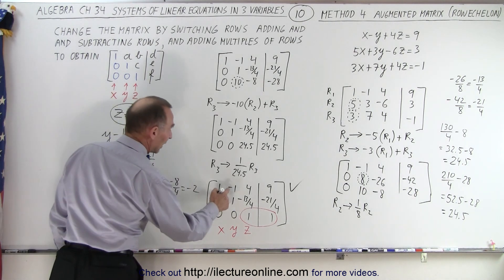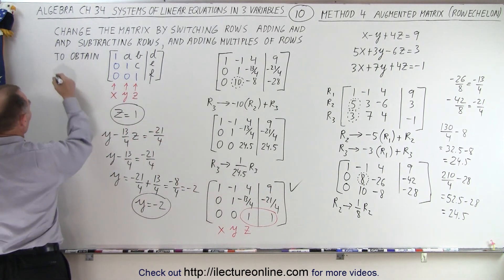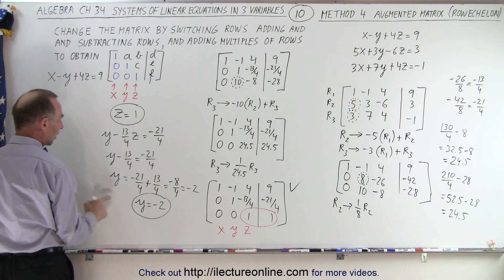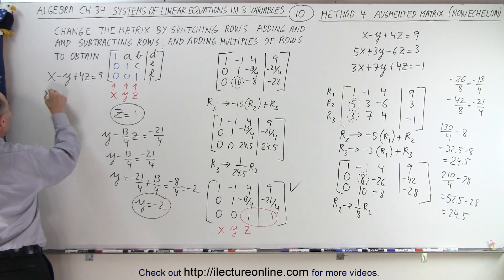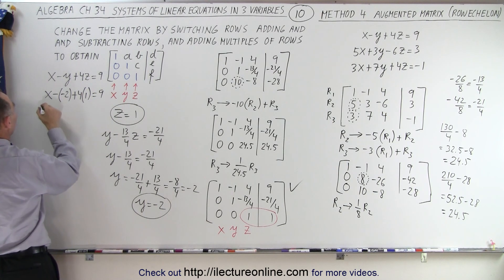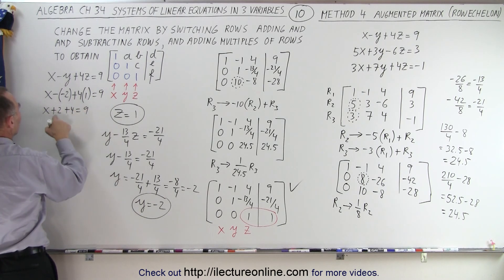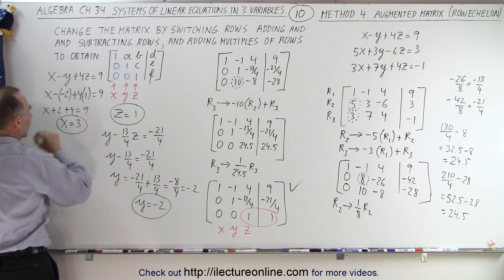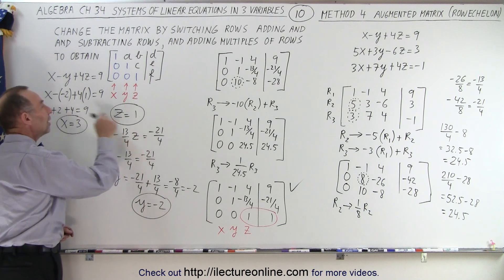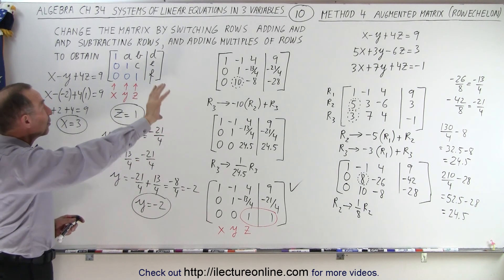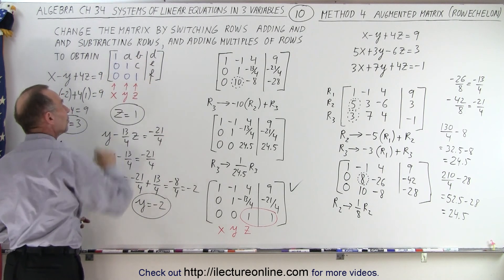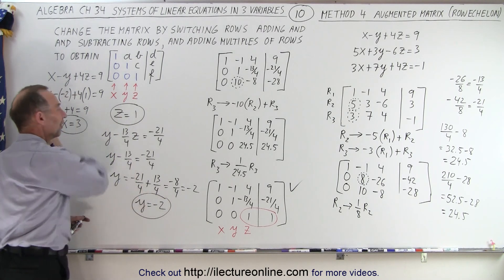The only thing left is to find x. From the top equation: 1·x minus 1·y plus 4·z equals 9. Substituting z = 1 and y = -2: x minus (-2) plus 4 times 1 equals 9, so x plus 2 plus 4 equals 9, giving x plus 6 equals 9. Subtract 6 from both sides and x equals 3. The solution is x = 3, y = -2, z = 1, obtained by transforming the augmented matrix into row echelon form.